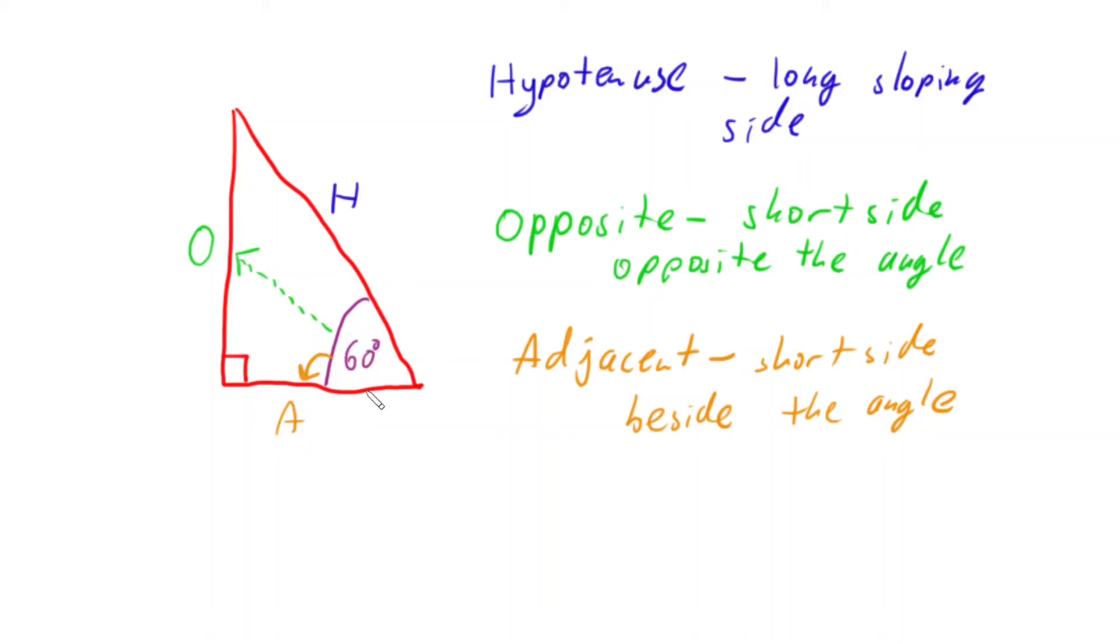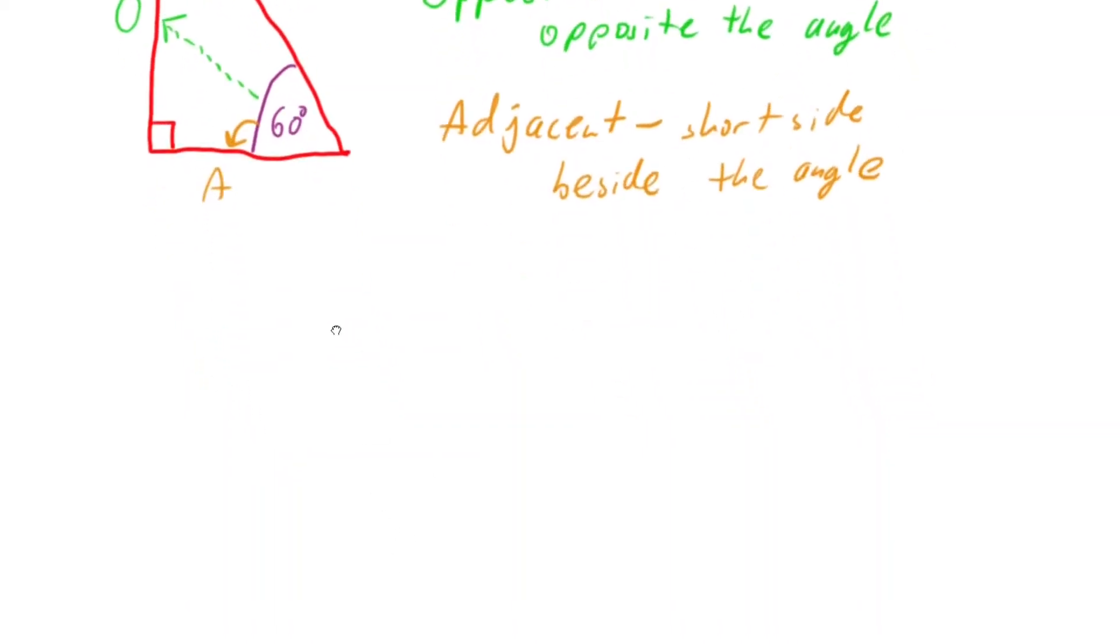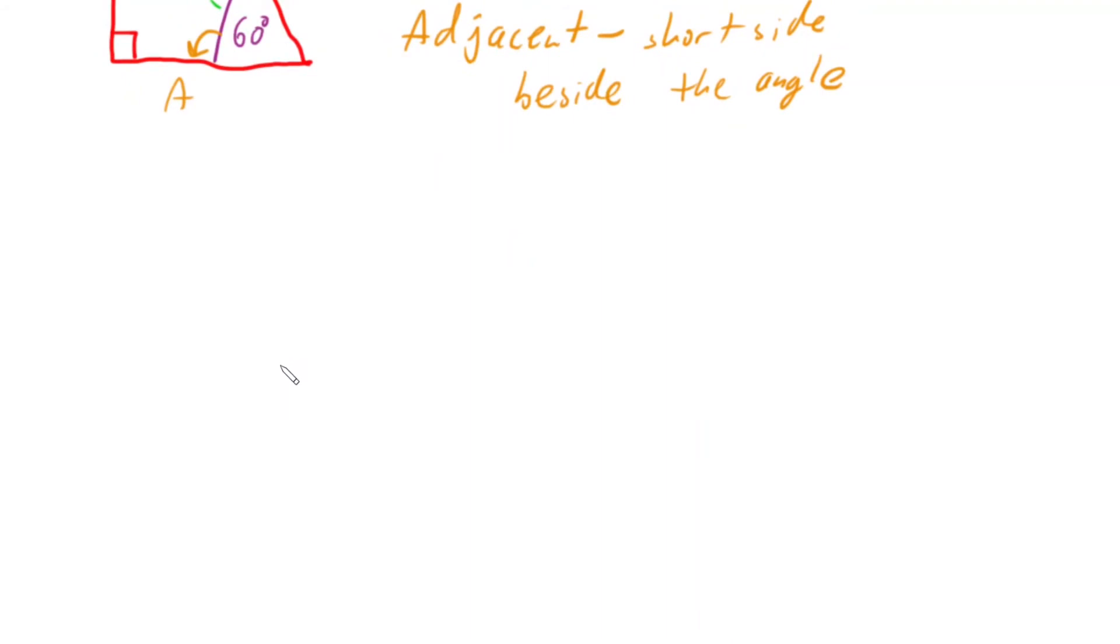And depending on where the angle is, depending exactly where these line up, let's go and draw another triangle. So if I go and draw a very similar looking triangle, and this time I'm going to label this angle up here - I'm going to just give it the Greek letter theta. It's one of the most common letters to be used.